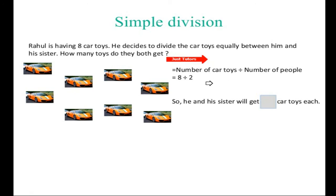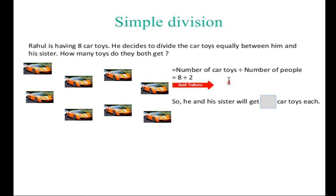We know that the number of car toys are eight and the number of people are two. We need to divide it. We divide eight by two and we get four. So he and his sister will each get four car toys.